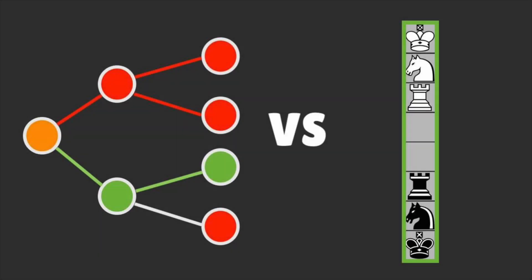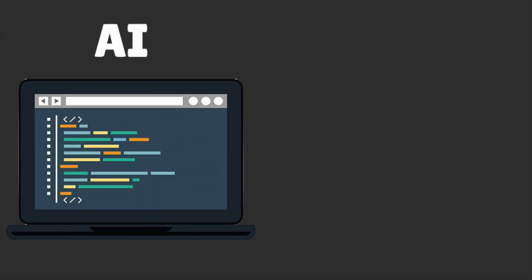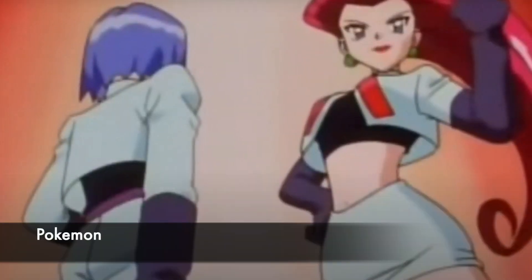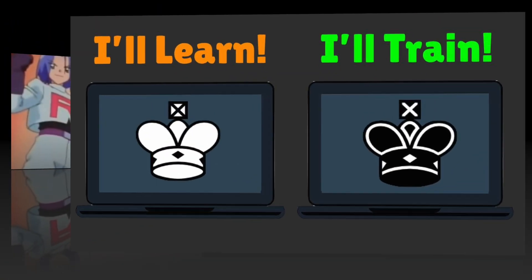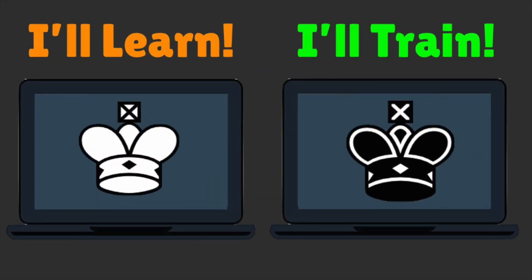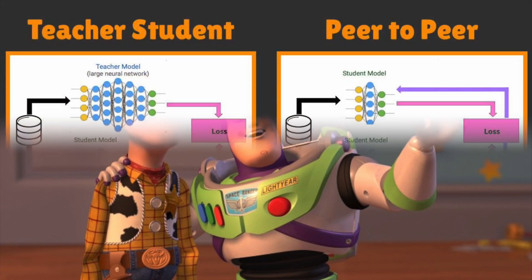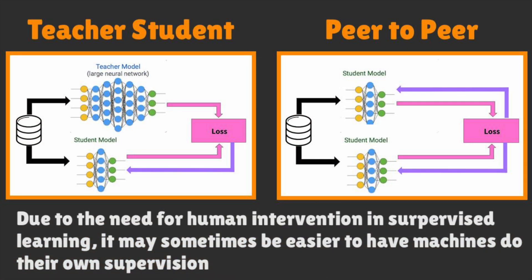Now that we know about graph theory, let's figure out how to apply it to games like 1D chess. Learning is best in pairs, so we won't be training just one model, but instead we'll be training two. This friendly competition is not new to the world of machine learning, and there are several models like the teacher-student as well as peer-to-peer, which requires one AI to help train the other AI.